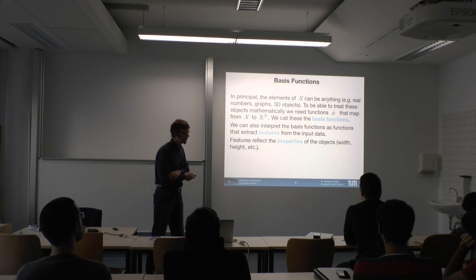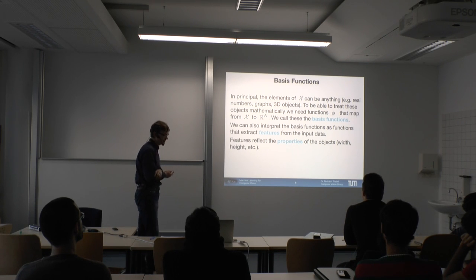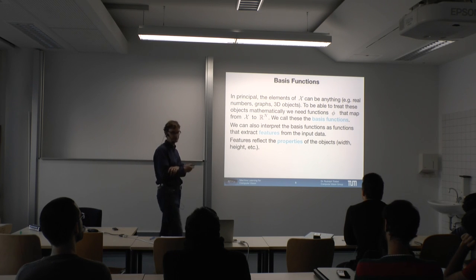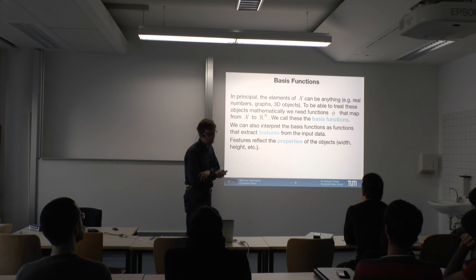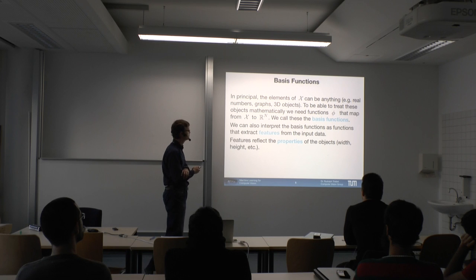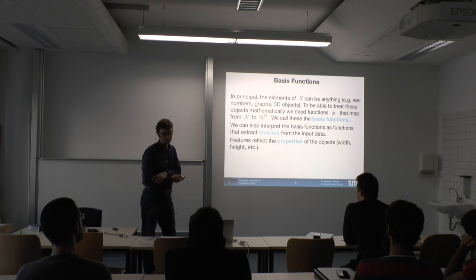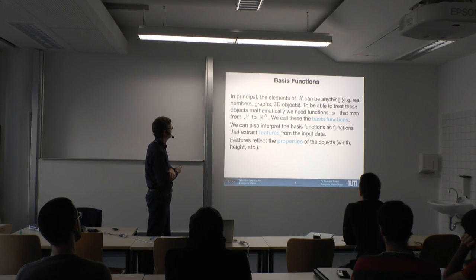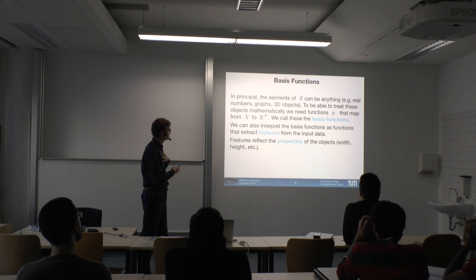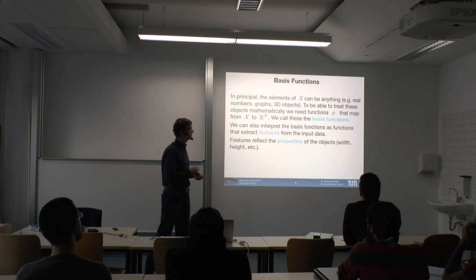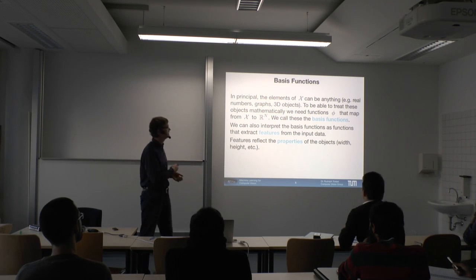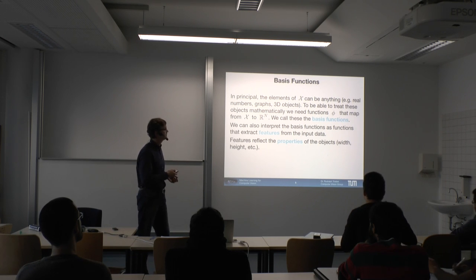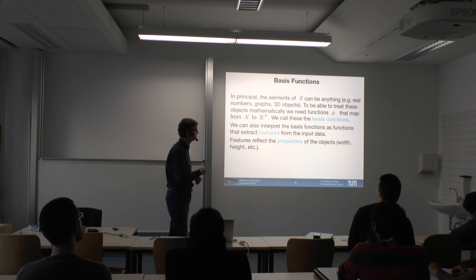There is another important notion called the basis function. The elements in X can be anything — real numbers, graphs, any kind of objects. Usually we first extract some features via a pre-processing step using so-called basis functions: a map phi from X to some other space. If X already consists of values in R, we can interpret phi as a mapping into a different space where regression is easier. This is a very general definition but helps us describe many different problems within the same framework.